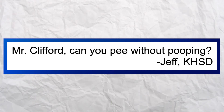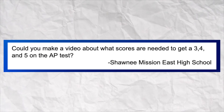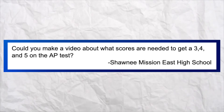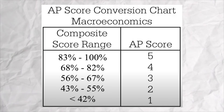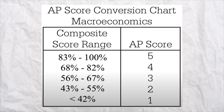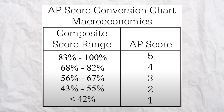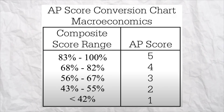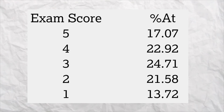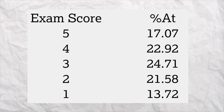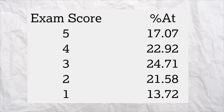Question: can you make a video of what scores you need to get a three, four, or five on the AP test? This is the breakdown from the 2019 AP macro exam. It's different every year, but in general you need about 85% to get a five and a 58% in order to pass. Last year about 17% of students got a five, 23% got a four, 25% got a three, so about 35% of students don't pass. But not you — you're watching my videos and you're putting in the time.